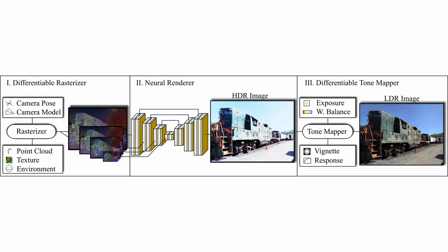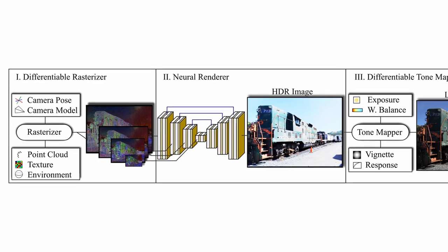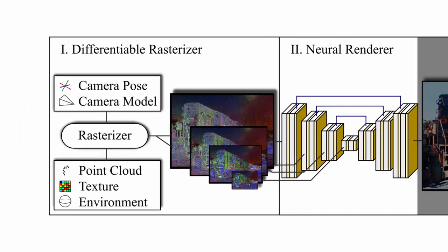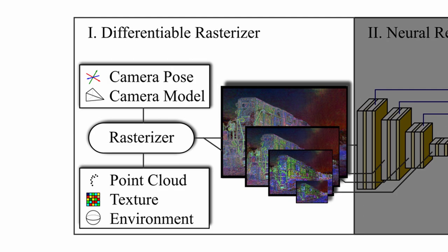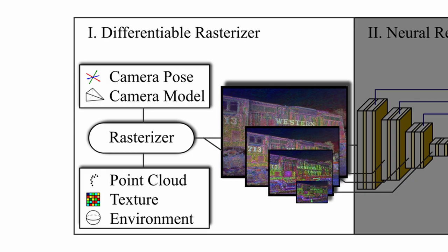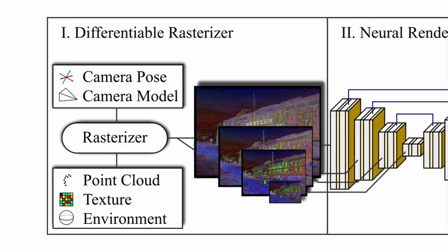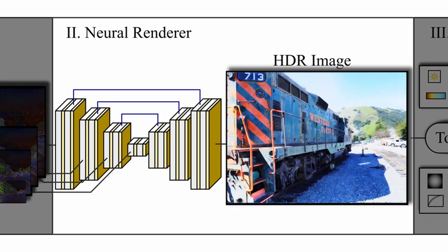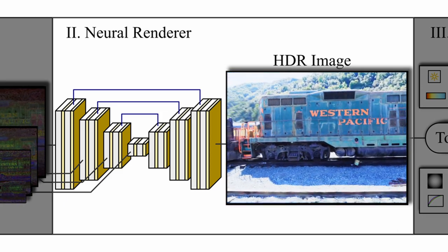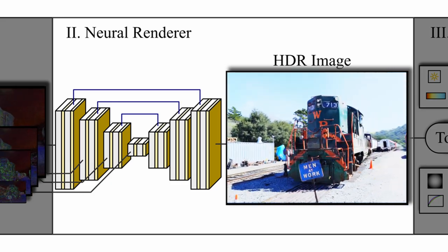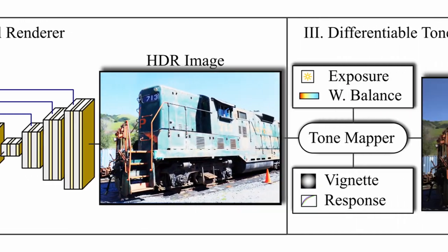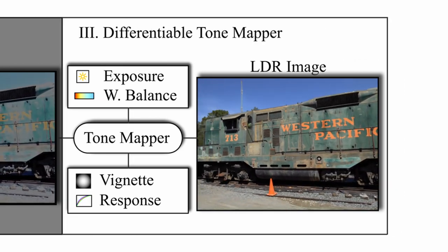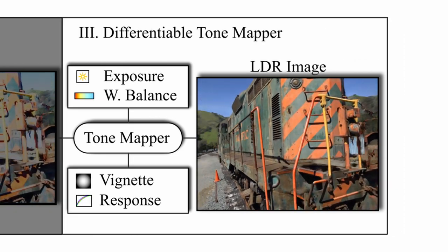Our pipeline consists of three major stages: rasterization, neural rendering, and tone mapping. The rasterizer projects the point cloud to a given viewpoint and blends the assigned neural descriptors into a multiscale output image. Points that face away from the camera or fail a fuzzy depth test are discarded. A deep neural network converts the multiscale input to a single HDR image. The main tasks of the network are hole-filling and shading. The intermediate HDR image is passed to a differentiable tone mapper, which generates the final LDR output.